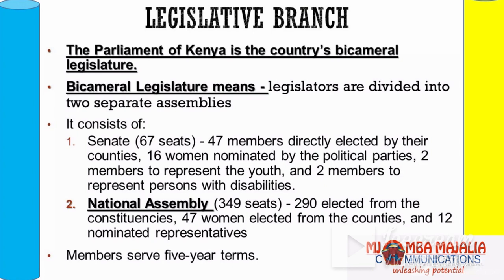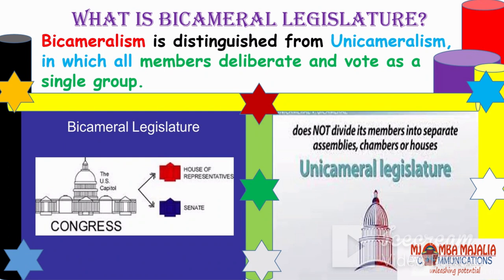The National Assembly has 349 seats: 290 elected from constituencies, 47 elected from counties — those are the women reps — and 12 nominated representatives. Members serve for five years.